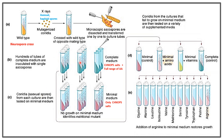Conidia from each culture were then tested in minimal medium. Some colonies showed growth and some colonies did not show any growth. Inability to grow indicated that a mutation affecting the ability to produce some critical growth substance had been induced in the parent spore by the X-rays.